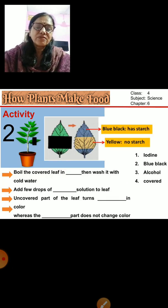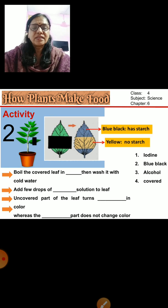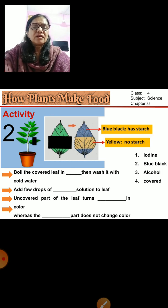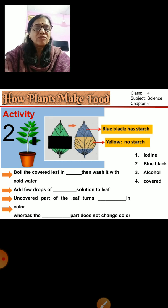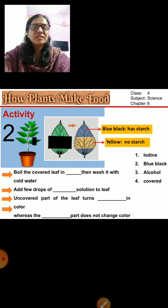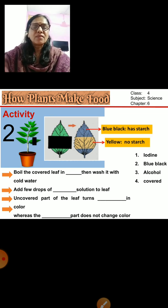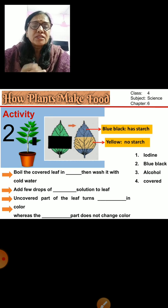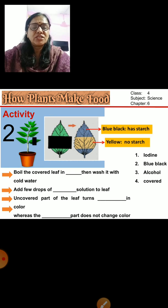In the second part of the activity, pluck the covered leaf. Boil the covered leaf in alcohol, then wash it in cold water. Add a few drops of iodine solution to the leaf. The uncovered part of the leaf turns blue-black in color, whereas the covered part does not change color.